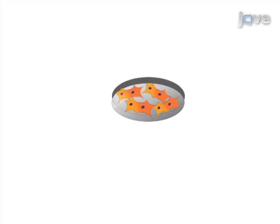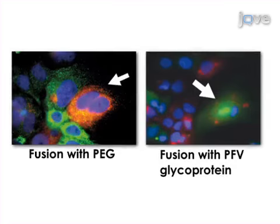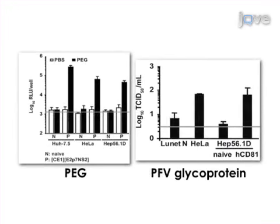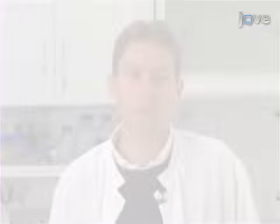The heterokaryons are then infected with HCV. Following either method of heterokaryon formation, fluorescence microscopy is performed to confirm fusion, and production of infectious particles is quantified.